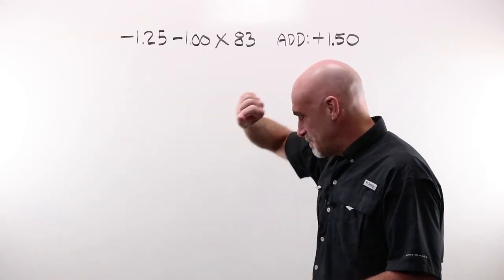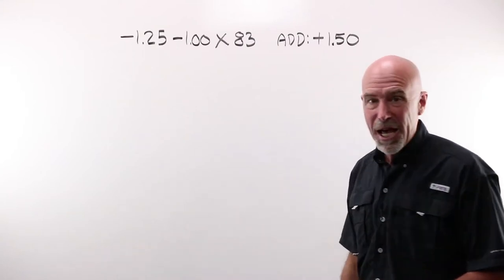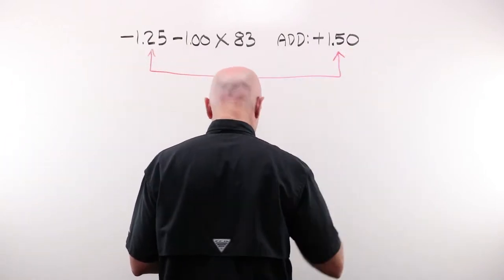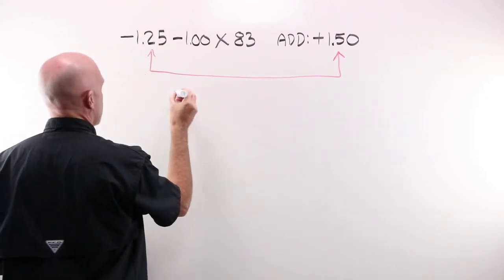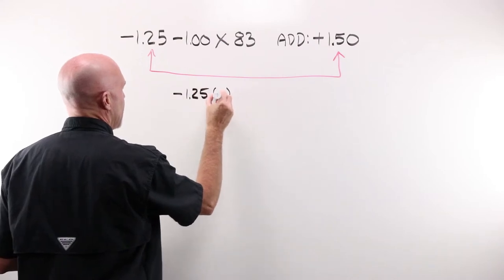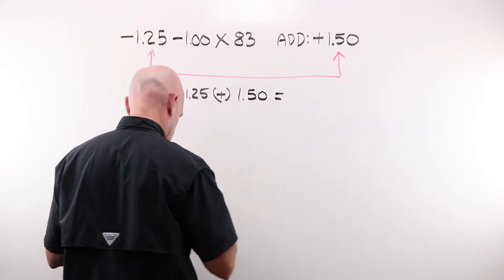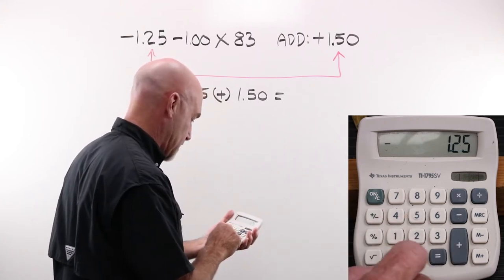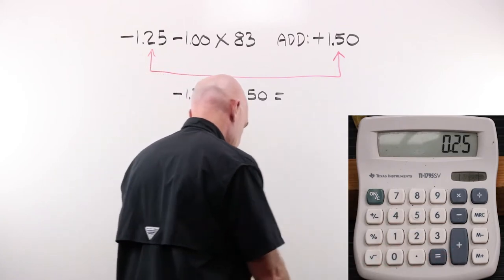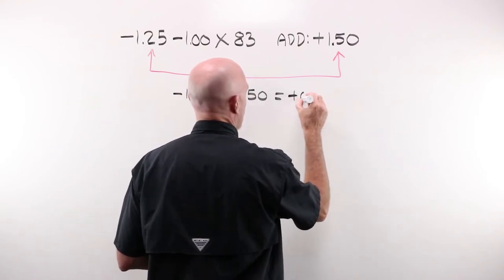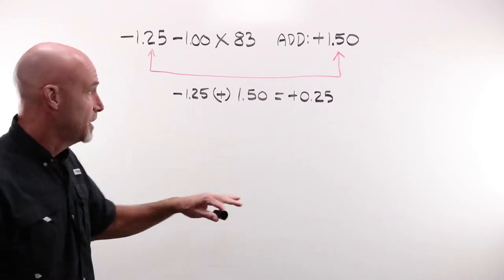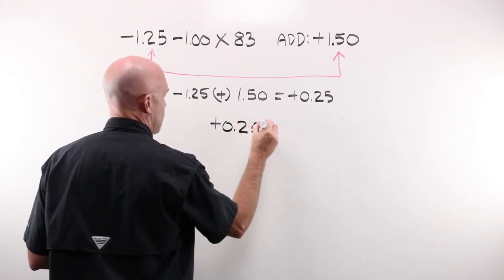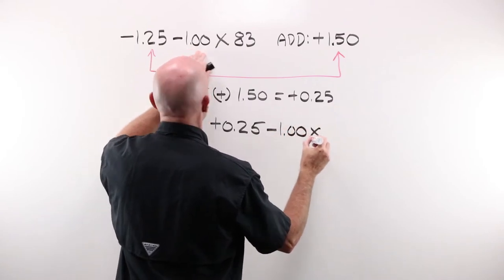Example number one, extremely common lens powers, extremely common add power. What did our formula say? Our formula says that we need to add our sphere power to our add power. That means we're gonna end up with minus 1.25 added to 1.50. I'm going to use our calculator. Minus 1.25 added to 1.50 gives me a positive 0.25. Now we need to write this as a single vision reader. And this would become plus 0.25 minus 1.00 at axis 83.